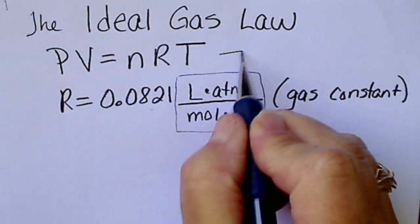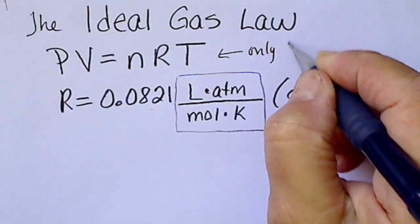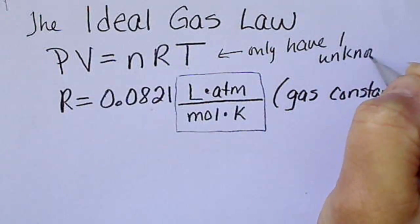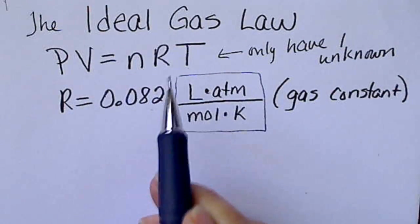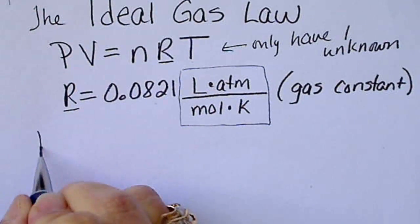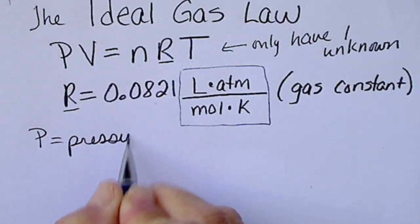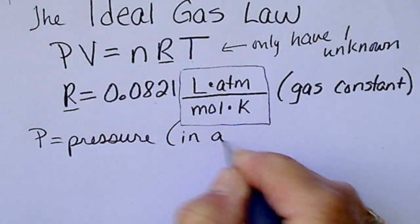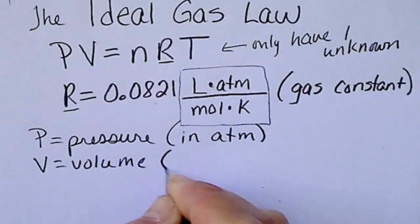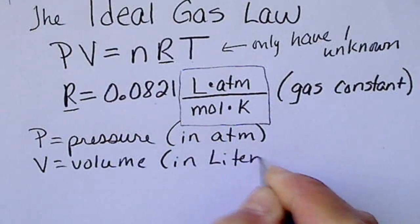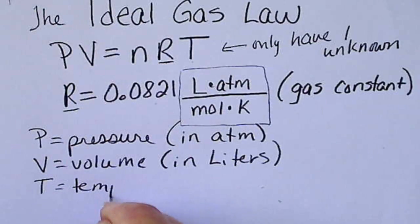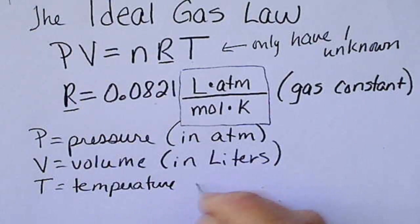In order to solve for this, we can only have one unknown value. So the problem would have to give us three out of these four unknowns. R is always known, it's this constant. P is the pressure and the pressure has to be in atmospheres. V is the volume and the volume has to be in liters. And T is the temperature and the temperature always has to be in degrees Kelvin.